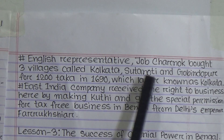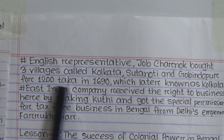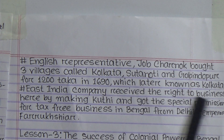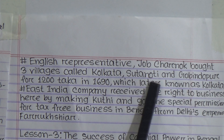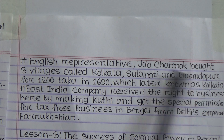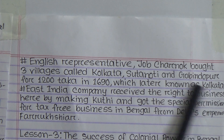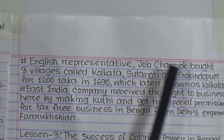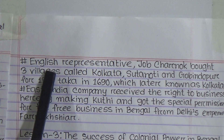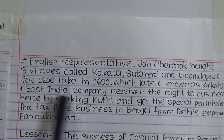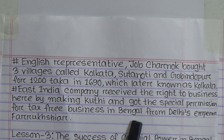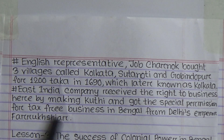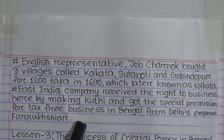English representative Job Charnock bought three villages called Kolkata, Sutanuti, and Gobindapur for 1,200 taka in 1698, which later became known as Kolkata. The English East India Company received the right to do business here and got special permission for tax-free business in Bengal from the Delhi Empire.